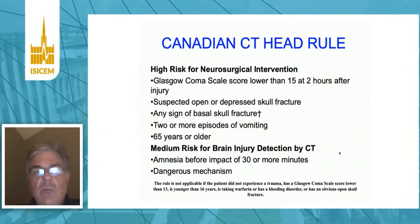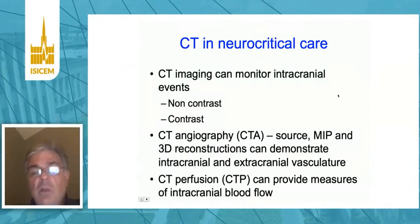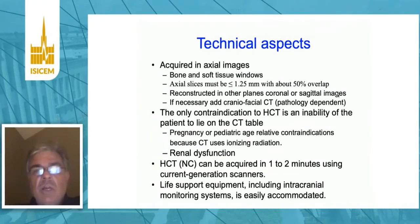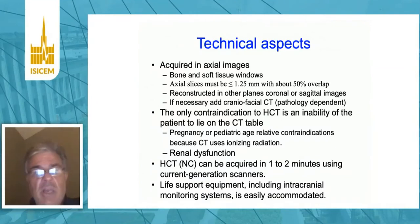The PECAN rule applies to children as well. In the critical care unit, the CT scan can be used to monitor intracranial beds, either with non-contrast or contrast scanning. CT angiography can look at the vasculature, and CT diffusion and flow. It's important to recognize that these are point-in-time measurements and give us anatomic structure rather than physiologic data. The only contraindication to a head CT scan is the inability of the patient to lie flat. Pregnancy and pediatrics are relative contraindications because of the risk of radiation.